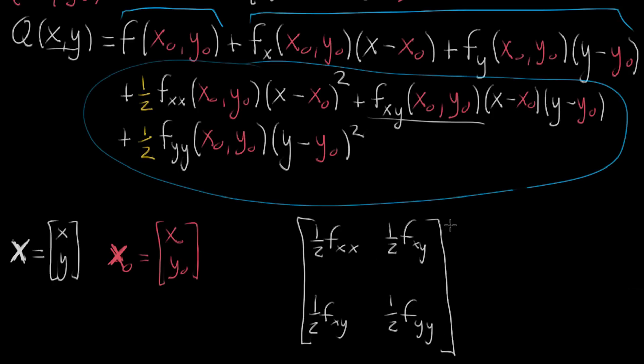And then the way that we express the quadratic form is we're going to multiply this by, well, the first component is whatever the thing is that's squared here. So it's going to be that x minus x naught. And then the second component is whatever the other thing squared is, which in this case is y minus y naught. And of course, we take that same vector, but we put it in on the other side too.